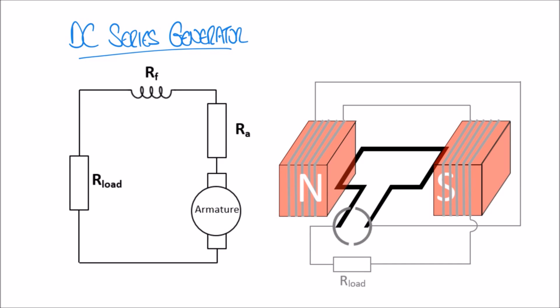Let's now look at a more applied example. Here we have a DC series generator, and if you've watched our previous videos on DC motors you'll notice it's a very similar arrangement to a DC series motor. In this generator, instead of a power supply we have an armature which we're going to move mechanically — by hand or using a turbine — to force the armature to rotate. As it does, an electromotive force is produced in the armature, making a current that flows around the series circuit.